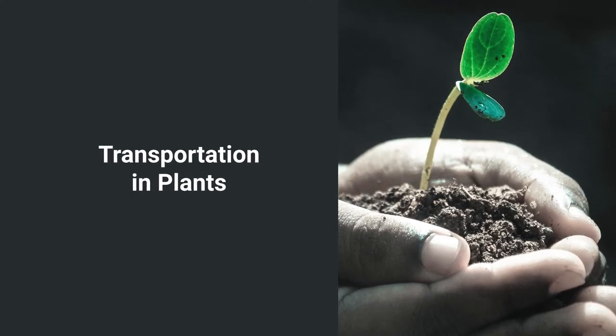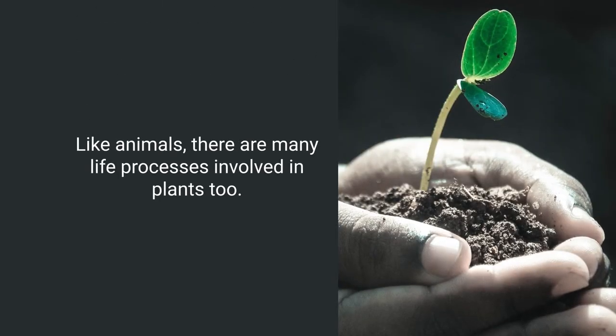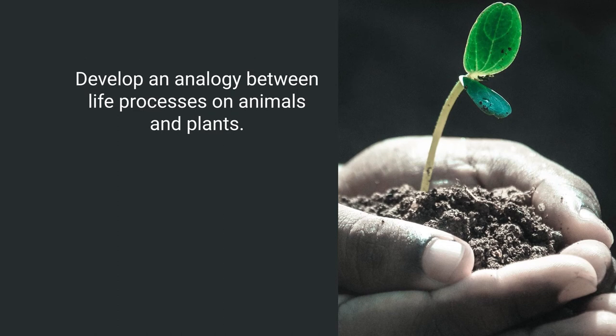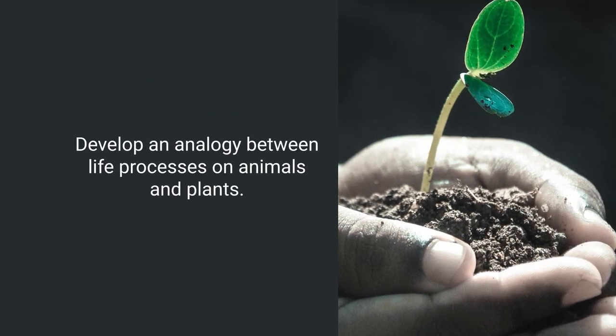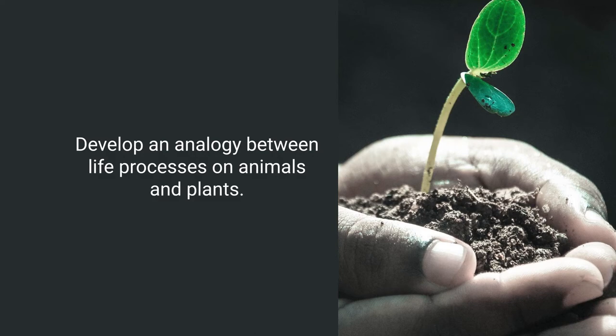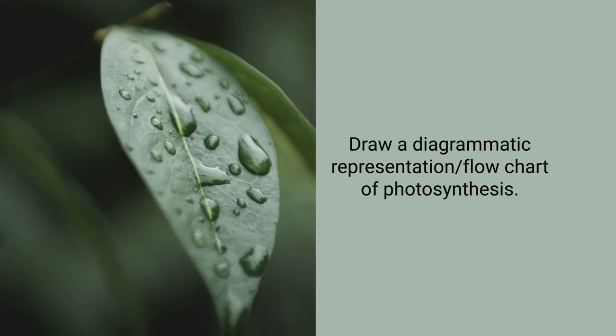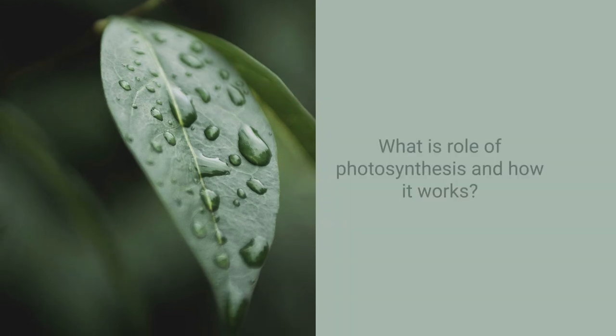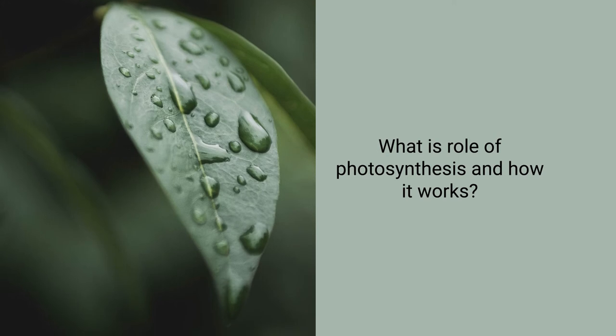Similarly, there is an important life process in plants called transportation. I will take one example from animals and one from plants so that when you deal with life processes you can deal with them in different ways. Like animals, there are many life processes in plants — you can ask students to enlist them and the organs involved, develop an analogy between animal and plant life processes, and draw a flowchart of photosynthesis explaining its role.